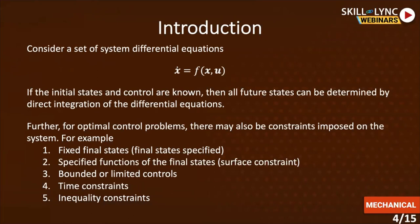Thus we can also say that C is just a function of u, and we are minimizing it over control constraints. Consider a system of differential equations: x-dot equals f. This is a very generic notation used to define differential equations. If the initial states and controls are known, then all the future states can be determined by direct integration of the differential equations. For optimal control problems, there may also be constraints imposed on the system.